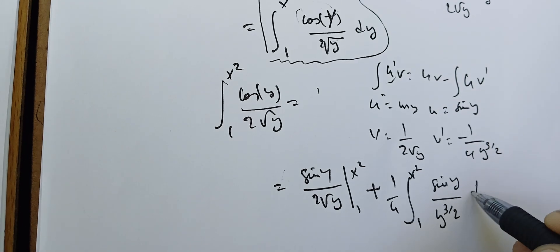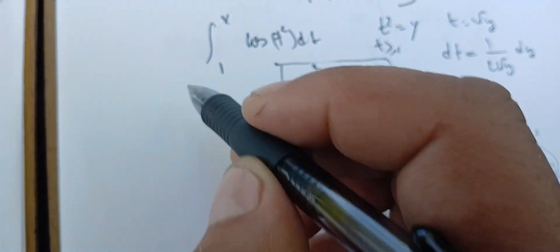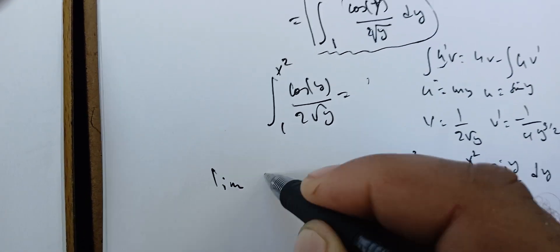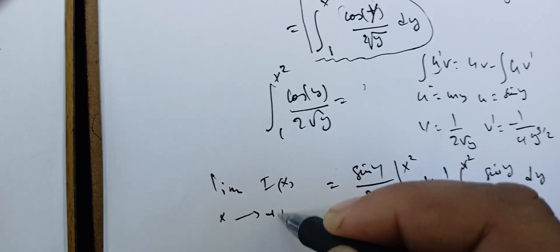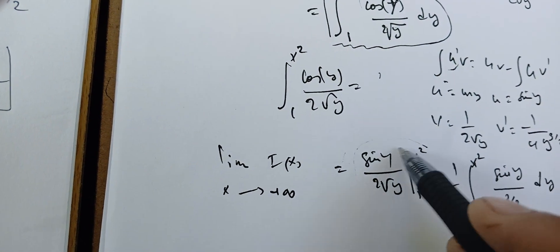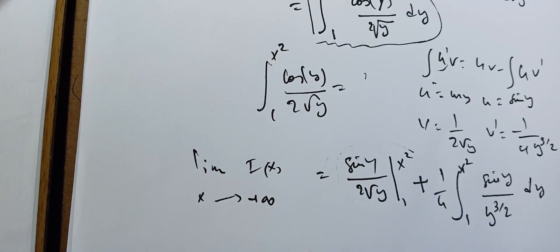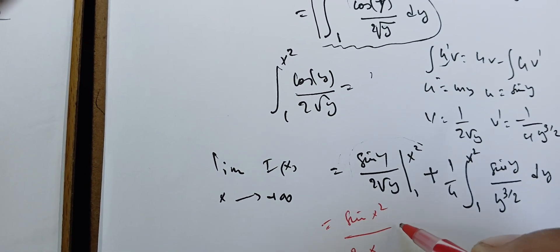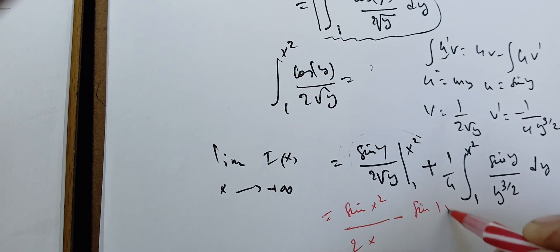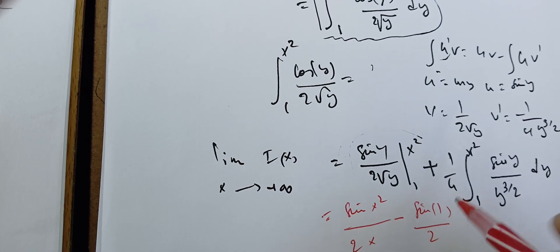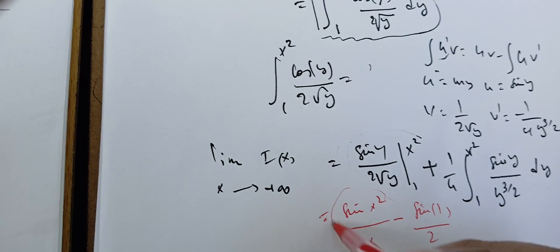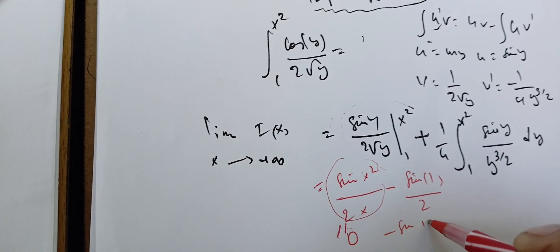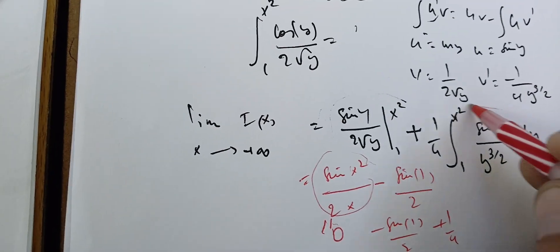Let me call this I(x). If I take the limit of I(x) as x goes to infinity, the boundary term gives sine(x²) over 2x minus sine(1) over 2. Taking the limit, the first term can be bounded by 1 over 2x, which goes to 0. So we get minus sine(1) over 2 plus 1 over 4 times the remaining integral.